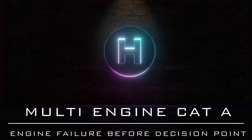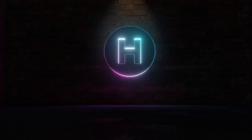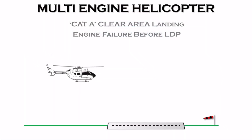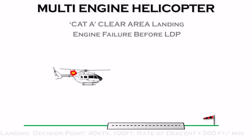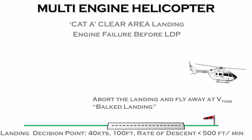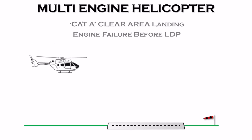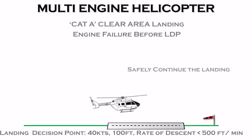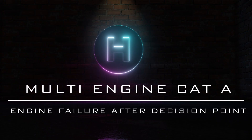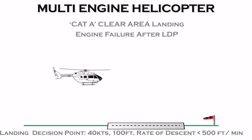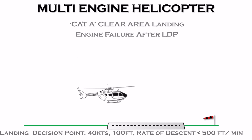If there's an engine failure before LDP and the pilot elects to do a balked landing, the correct procedure is to raise the collective to obtain maximum one-engine-inoperative power and to increase airspeed to the take-off safety speed — 45 knots in this case — to start a climb to get clear of the obstacles. If electing to continue the approach and landing following an engine failure, the correct procedure is to raise the collective to the OEI engine performance limit and then select the landing attitude, using the remaining power to cushion the landing. This is the same procedure followed if engine failure occurs after the landing decision point.